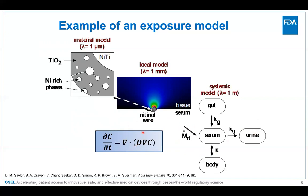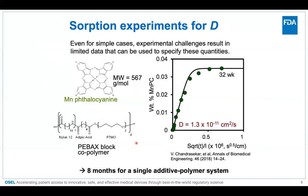The key thing needed to solve this equation is the diffusivity D. You can get it experimentally using sorption experiments — placing a polymer coupon into a solution of the solute of interest and observing absorption. Here we have a phthalocyanin dye leaching into the polymer, and you fit the weight percent absorption curve to get both the diffusivity and solubility. The problem is that it takes eight months, and that's just for a single polymer-solute combination. With many different solutes and many different polymers, this becomes prohibitive.